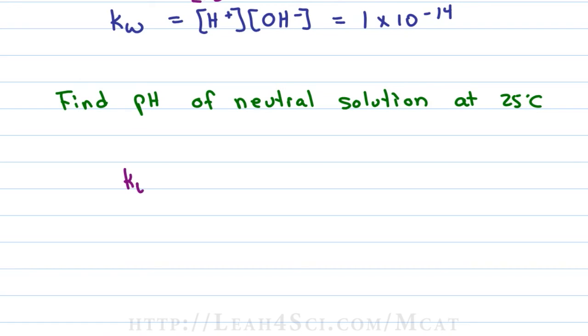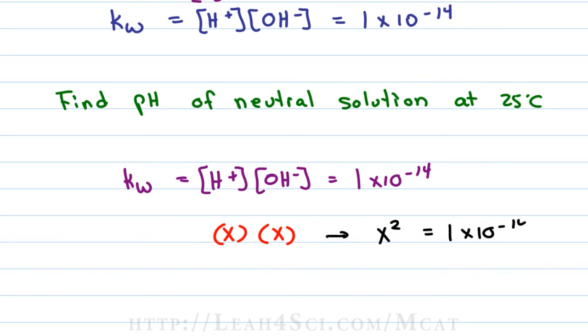And so we set up the expression Kw is equal to the concentration of H+ times the concentration of OH-, which is equal to 1 × 10^-14. But how do you solve an equation with two unknowns? The key here is to recognize that even though they're unknown, if they're equal to each other, I can call the concentration of H+ X and the concentration of OH- X.